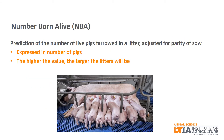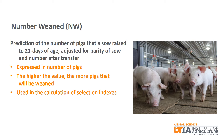The first is Number Born Alive or NBA. Number Born Alive predicts the number of live pigs farrowed in a litter, adjusted for parity of the sow. It is expressed in number of pigs; the higher the numerical value, the larger the litters would be expected to be. Next is Number Weaned or NW. Number Weaned is a prediction of the number of pigs that a given sow will raise to 21 days of age, adjusted for parity of sow and number after transfer. Again expressed in number of pigs — the higher the numerical value, the more pigs that can be expected to be weaned.